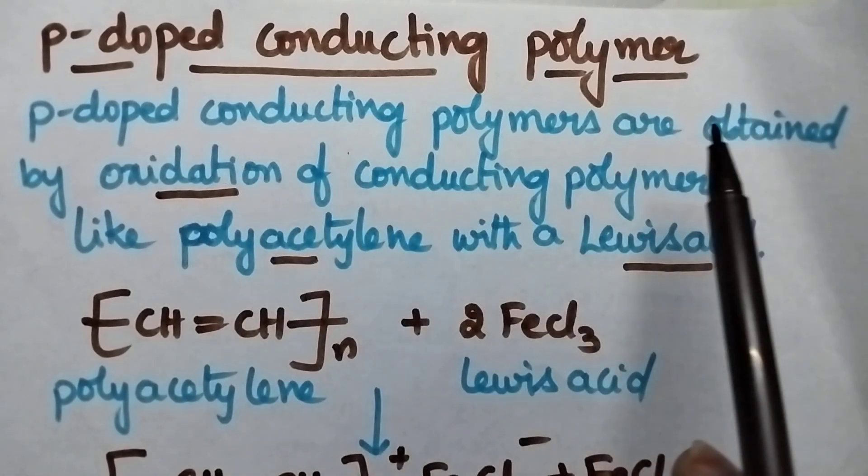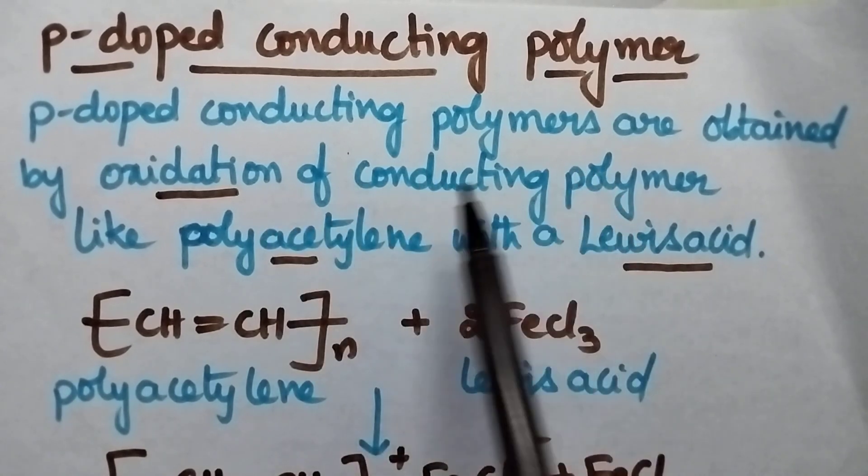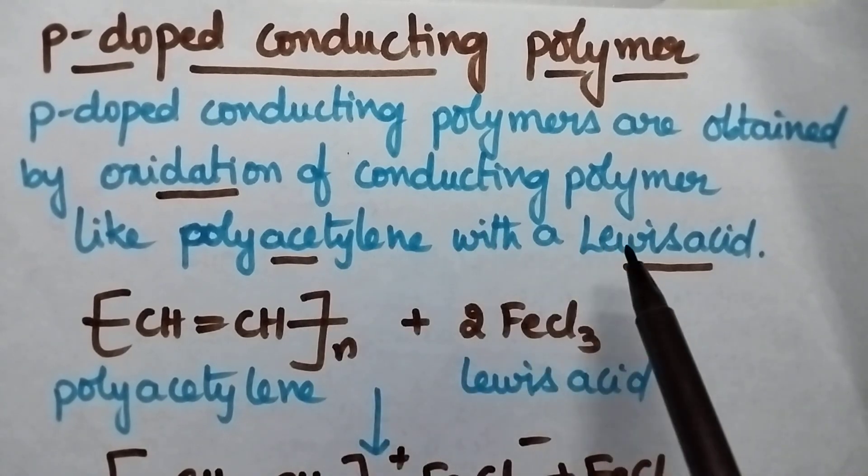P-doped conducting polymers are obtained by the oxidation of conducting polymers. The best example for conducting polymer is polyacetylene with a Lewis acid.